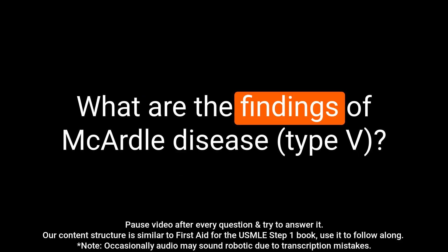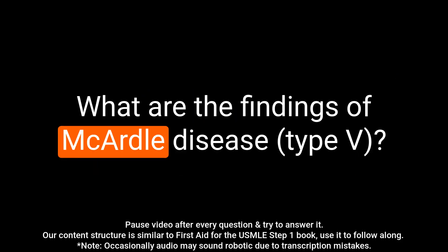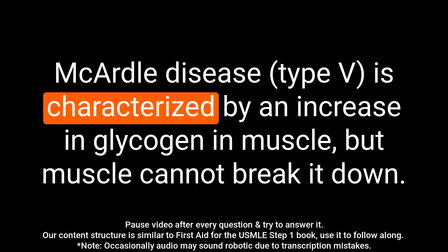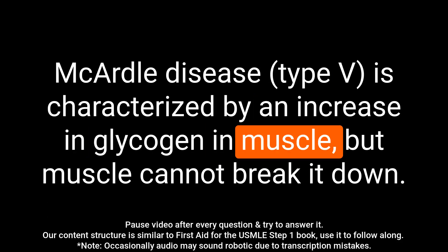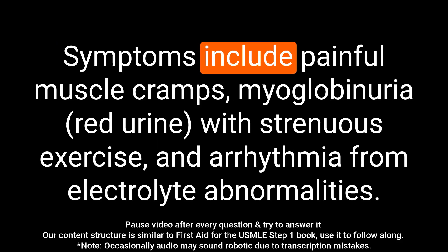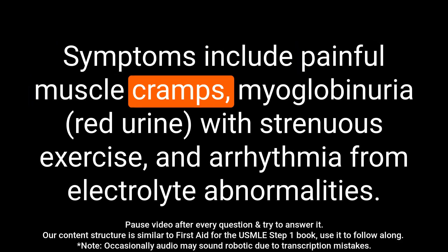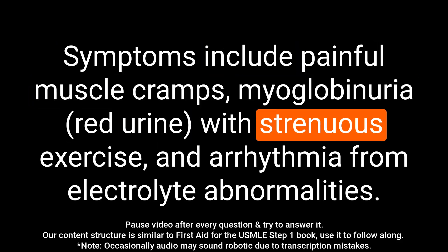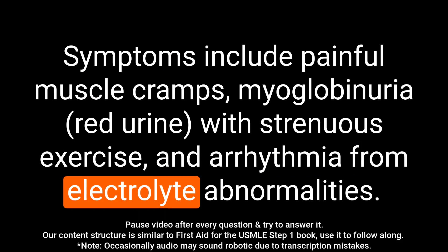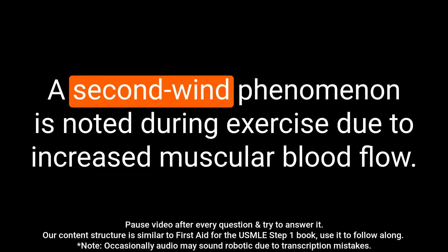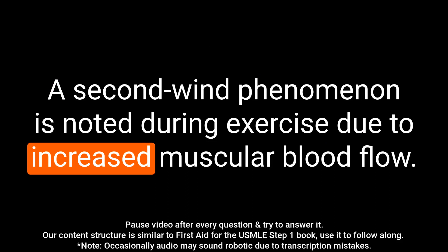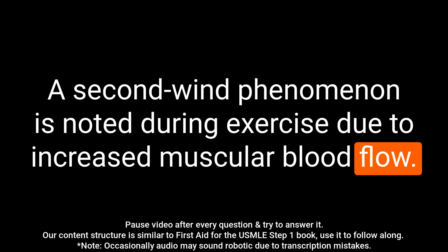Question: What are the findings of McArdle disease? Answer: McArdle disease is characterized by an increase in glycogen in muscle, but the muscle cannot break it down. Symptoms include painful muscle cramps, myoglobinuria with strenuous exercise, and arrhythmia from electrolyte abnormalities. A second wind phenomenon is noted during exercise due to increased muscular blood flow.